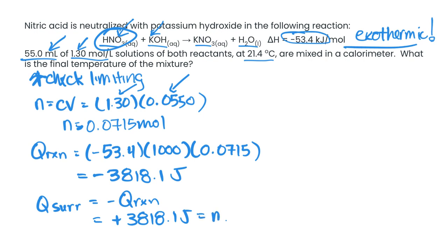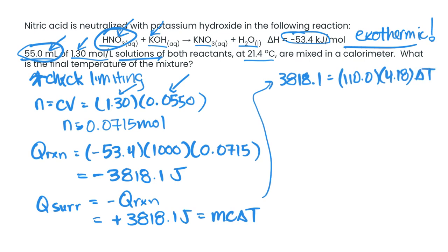From here, we can substitute this into mc delta T. So what values are we putting in? Well, we've got 3818 for our Q. And the mass we want to use here now is our solution, our final solution. We need to take those two volumes and add them together to get 110.0 grams. We're making the assumption it's the same density as water. We're using a specific heat capacity of water. And then we're going to use our delta T here. So if we solve for our delta T, then we get 8.3038. And remembering delta T is T final minus 21.4 equals 8.3038. So our final temperature is 29.7 degrees Celsius.